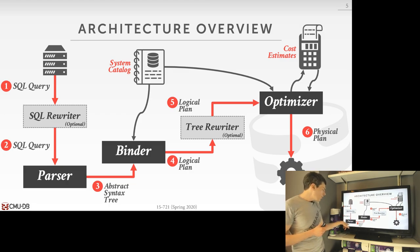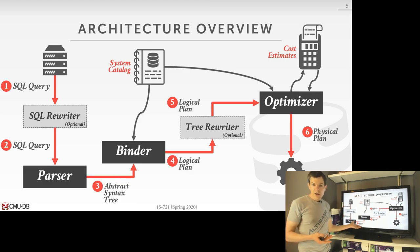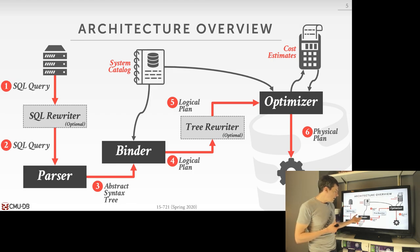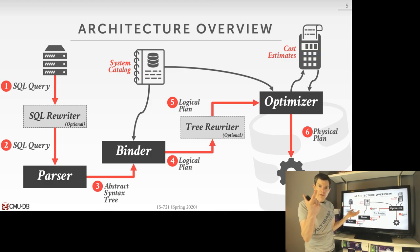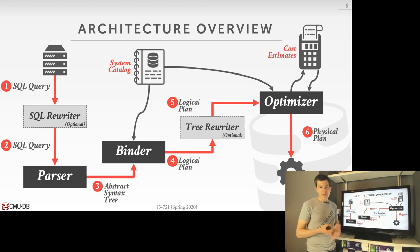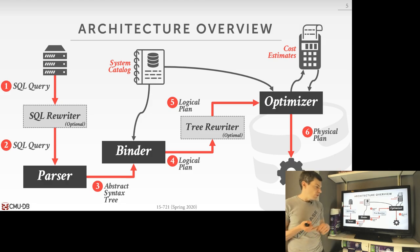Then we take the SQL query, run it through the SQL parser, and that spits out an abstract syntax tree with the string tokens of the query — table names, column names, and so forth. Then we pass this into the binder, which does lookups in the system catalog to map the table names and columns referenced in the query to internal identifiers, giving us column types and constraints.